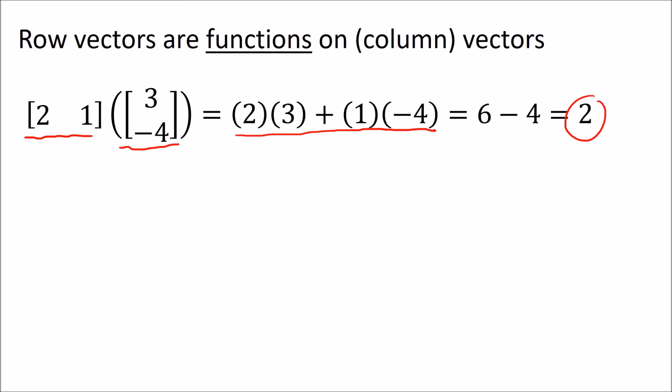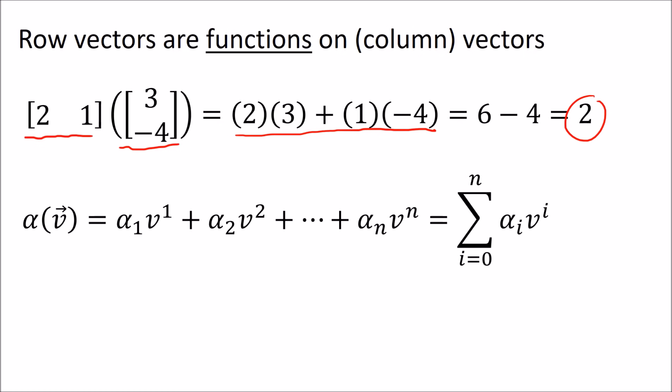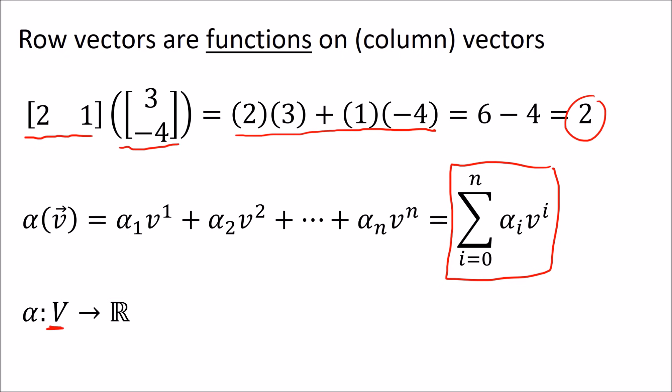If we have any general co-vector alpha acting on any general vector v, then we get the output value by taking the dot product of the two vectors. We can write that more compactly using a summation. So ultimately, we should think of row vectors as functions that take an input from some vector space V and return a real number or a scalar.